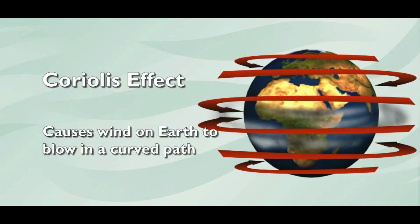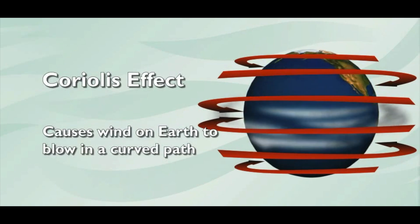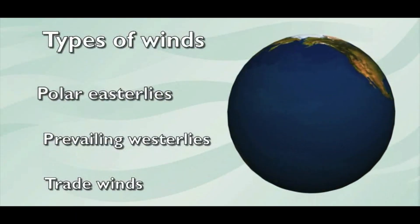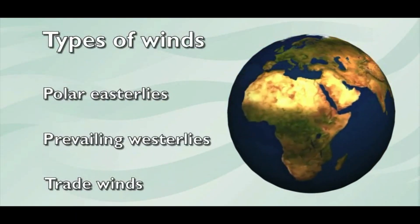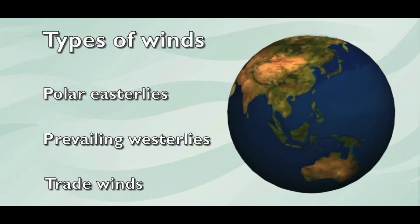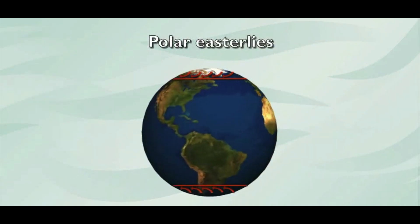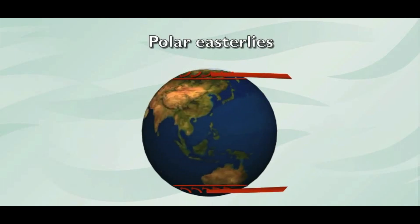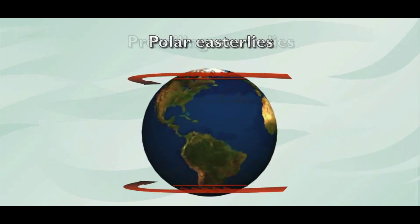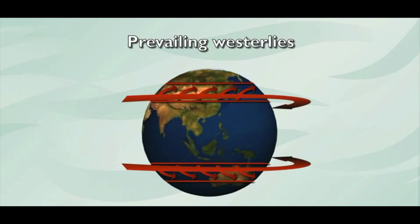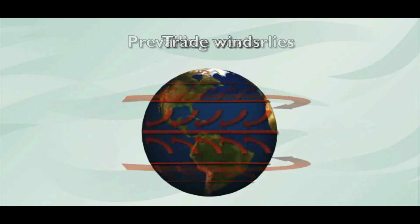Anyways, they're all kind of winds. They even have names. Yeah, like a breeze and a gust and, well, no. Like polar easterlies, prevailing westerlies, and trade winds. Polar easterlies are winds that come in from the poles and blow east to west. Prevailing westerlies are warmer winds blowing in the middle latitudes. And trade winds are near the equator.